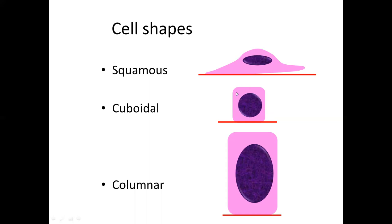Cuboidal cells are shaped like a box or a cube and have a central round nucleus. Columnar cells are like a cylinder or an elongated box, with an ovoid nucleus whose long axis is placed perpendicular to the basement membrane. These are the three types of cells — squamous, cuboidal, and columnar — that you see in epithelia.